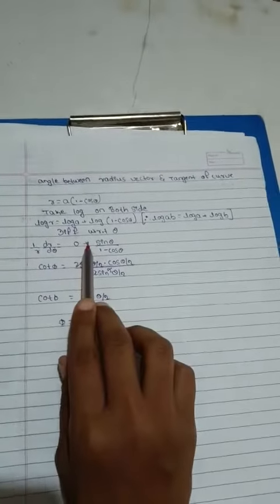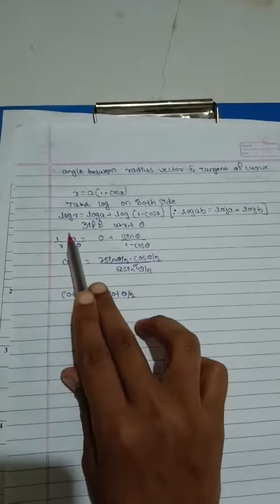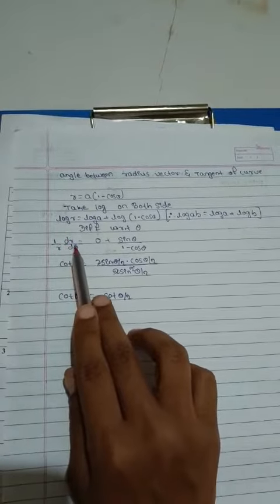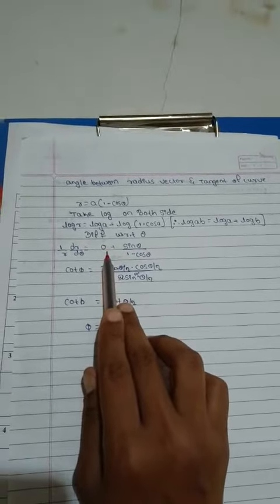Now, we differentiate with respect to theta. Log r differentiated is 1 by r into dr by d theta. Log a is equal to 0.